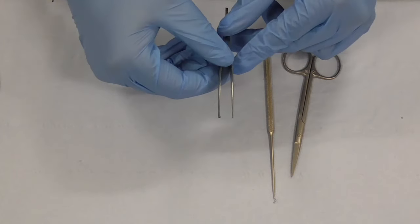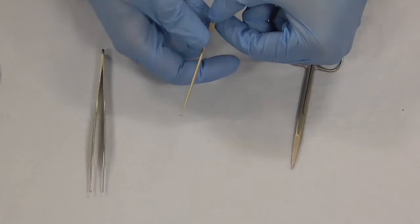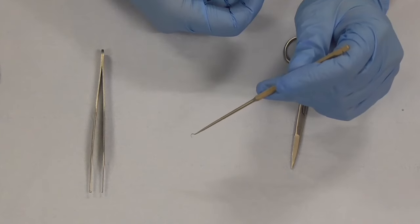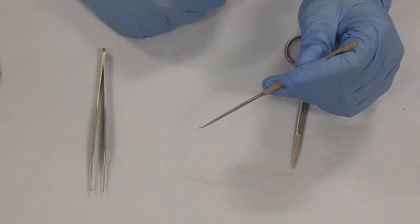Now the best way to hook it is not actually the dissecting forceps but to use a skin hook and then you can actually hook the skin, lift it and stitch and we will demonstrate that later on.